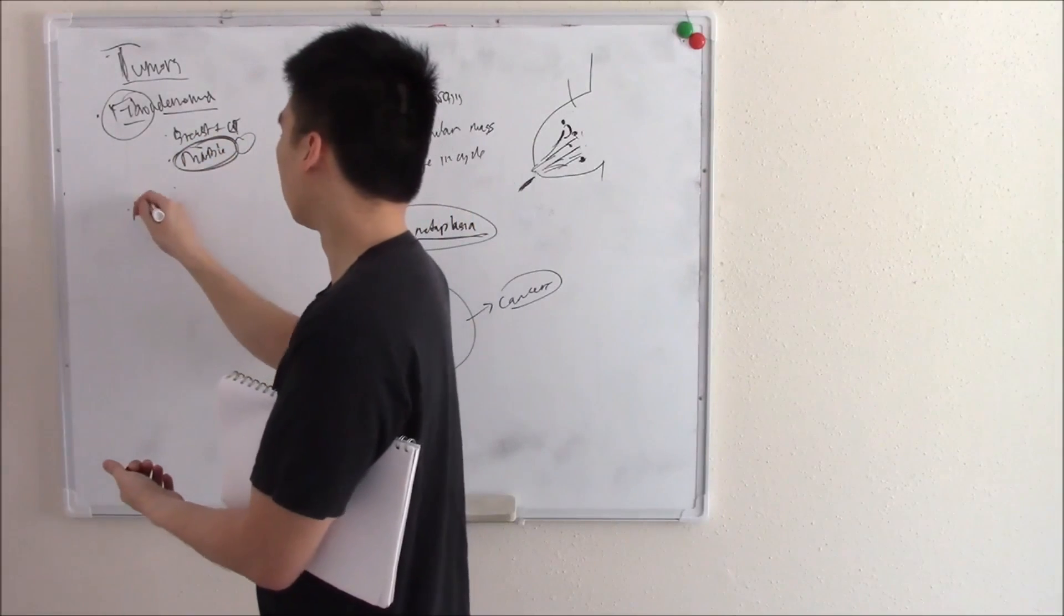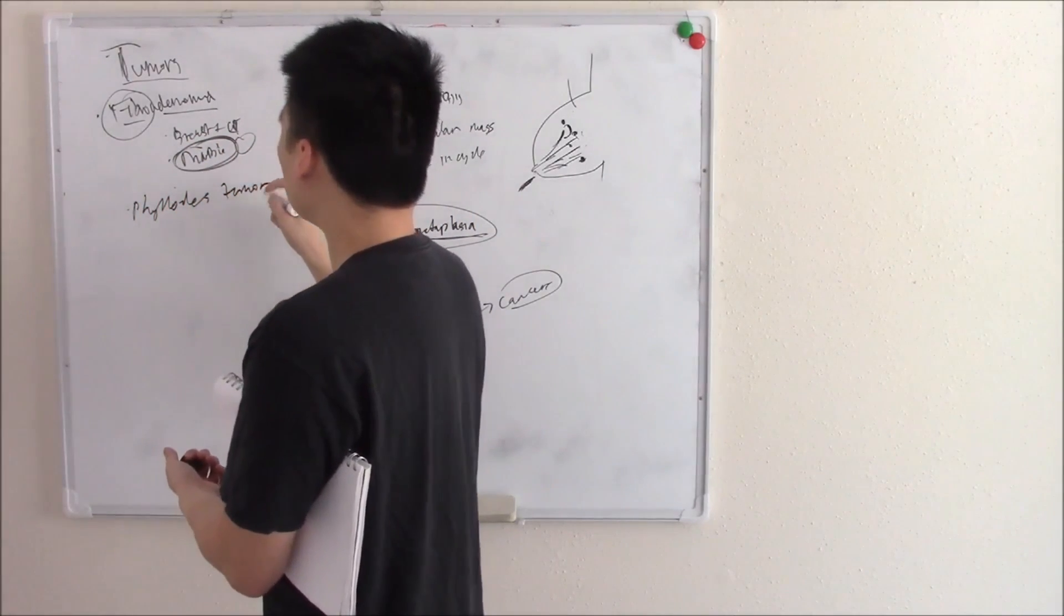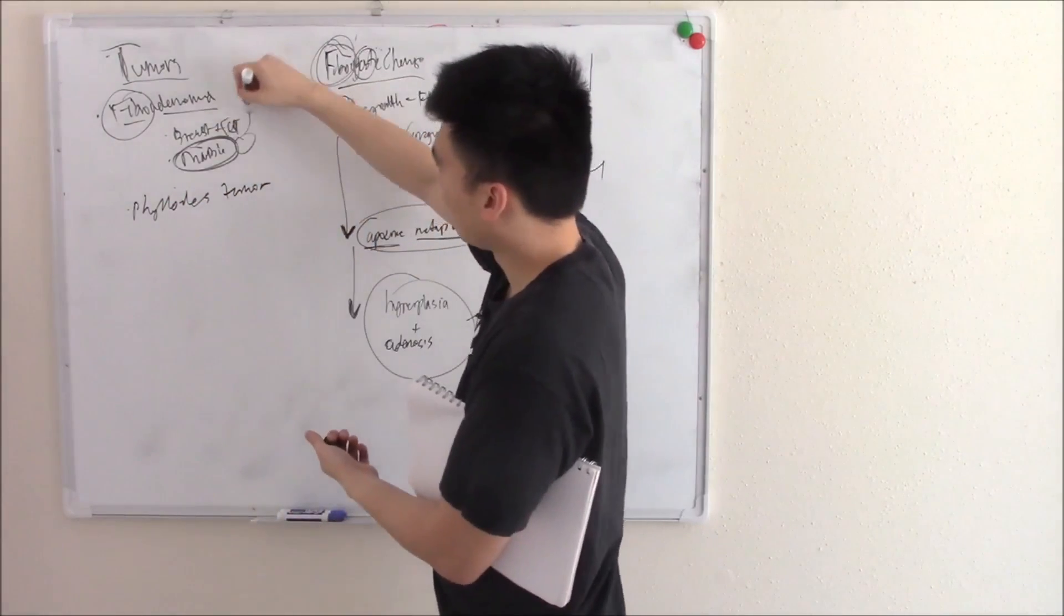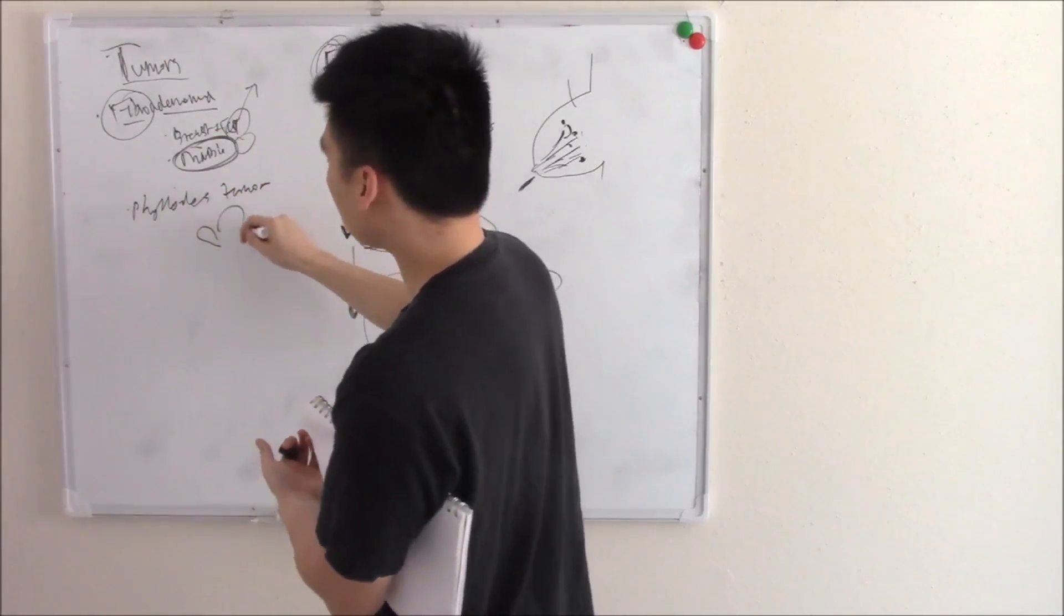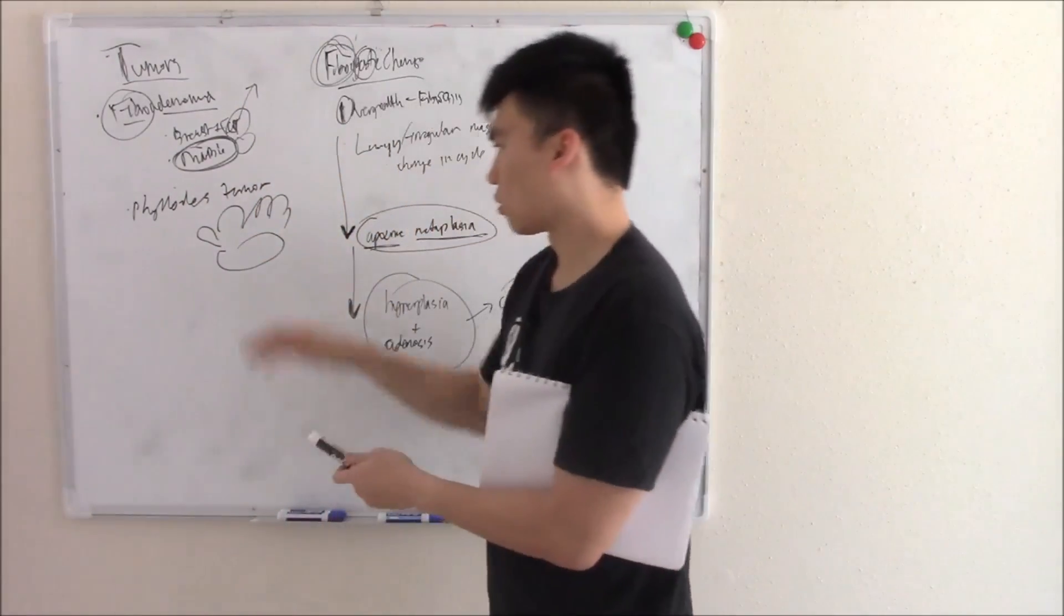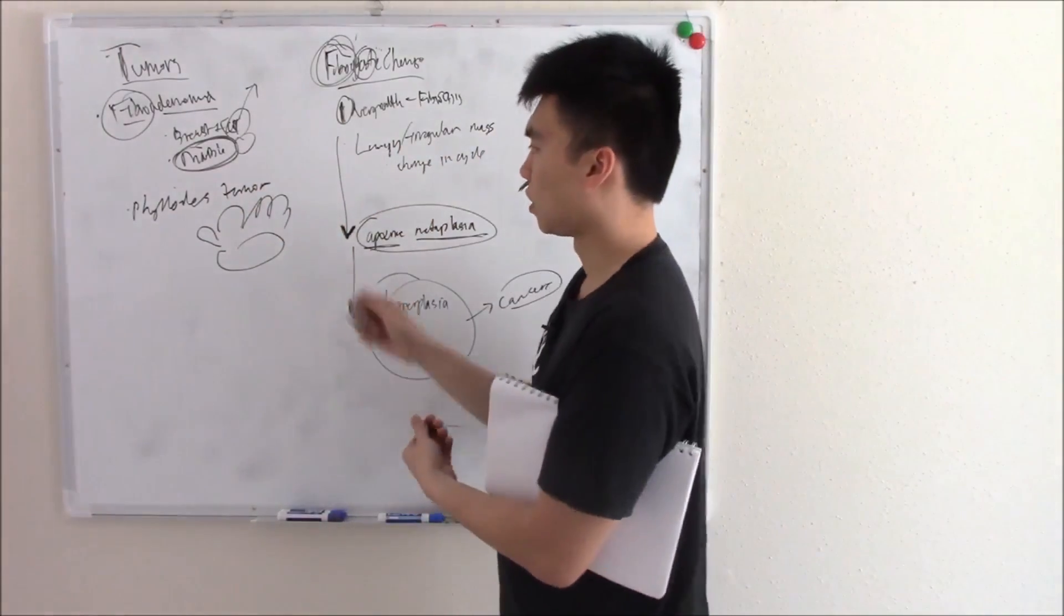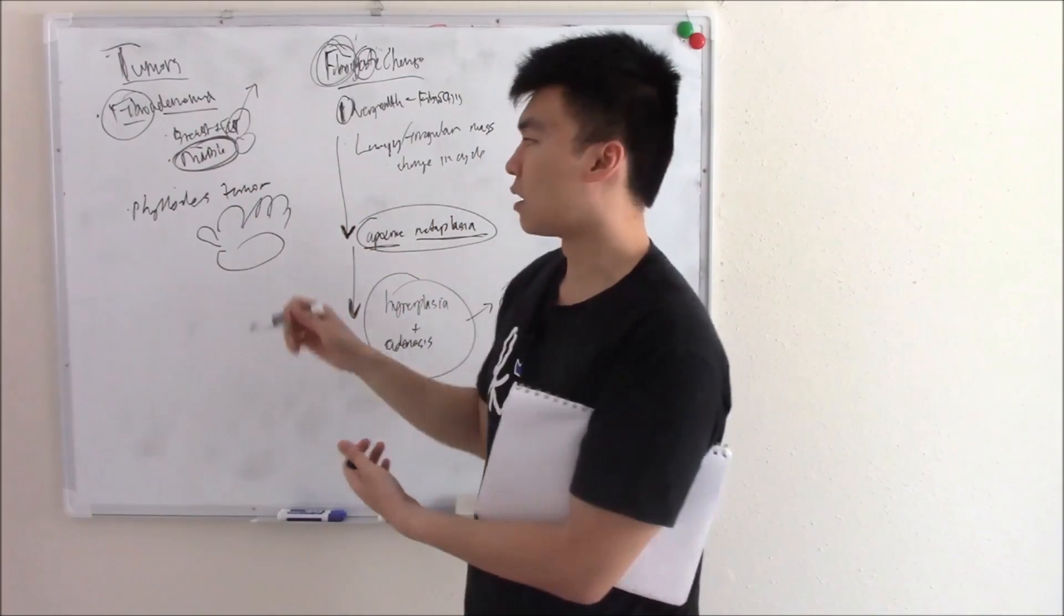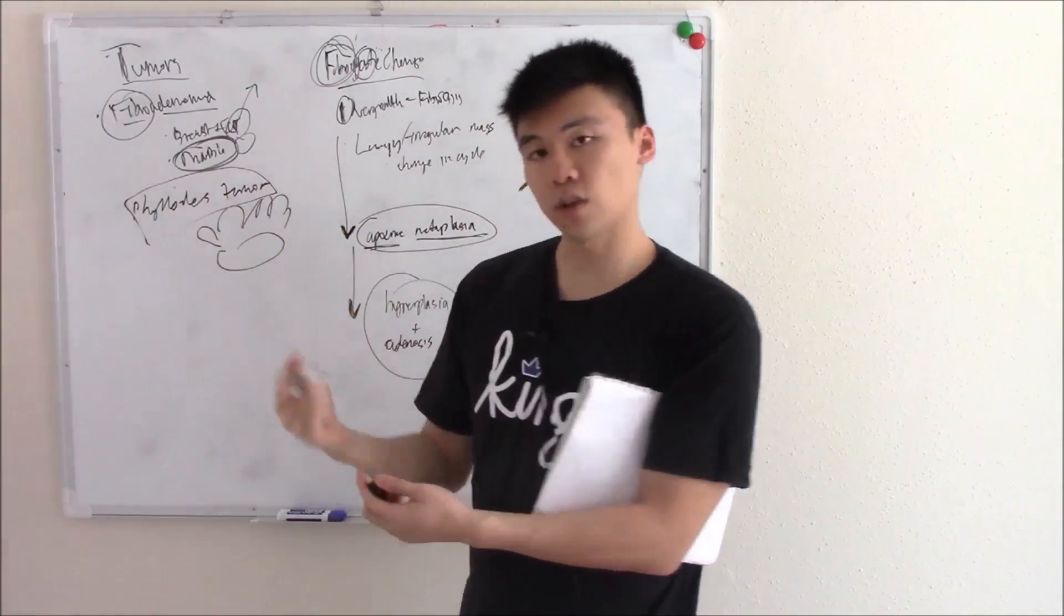Something very similar is phyllodes tumor. This is when you have a little bit more connective tissue than a fibroadenoma, and it can cause these little cauliflower-like projections. You don't really appreciate that on palpation, but if you see a histo image, which will be in my notes, you're going to see these really large cauliflower, very easy to identify. That is a phyllodes tumor.